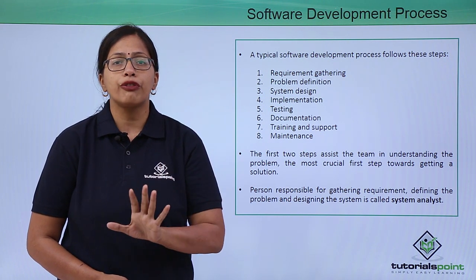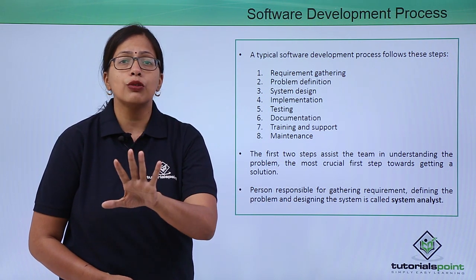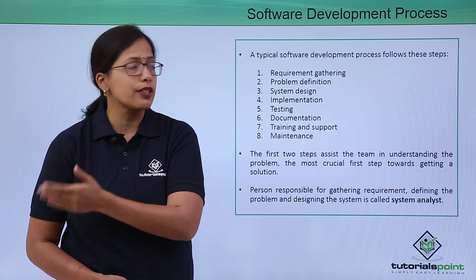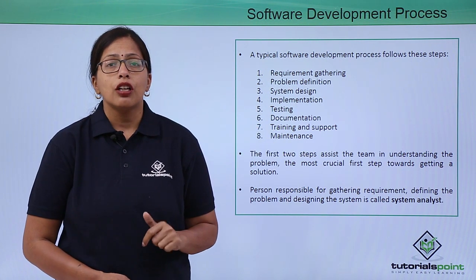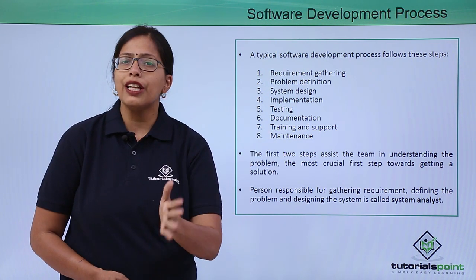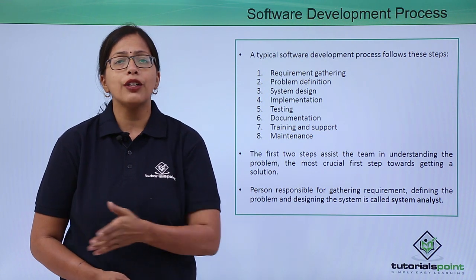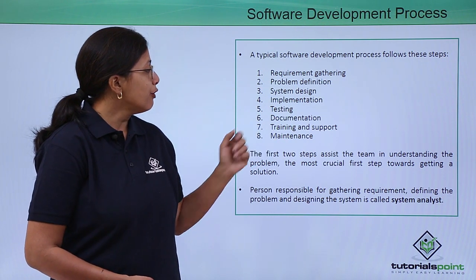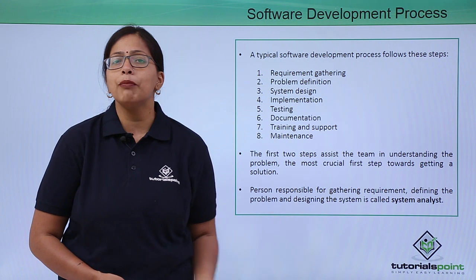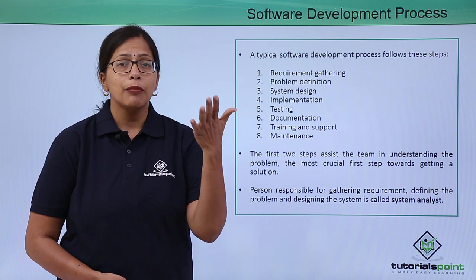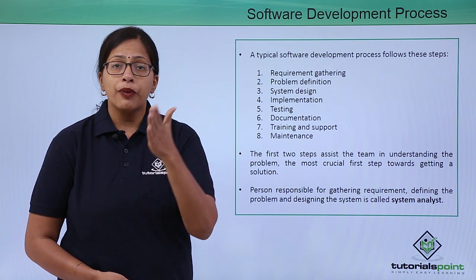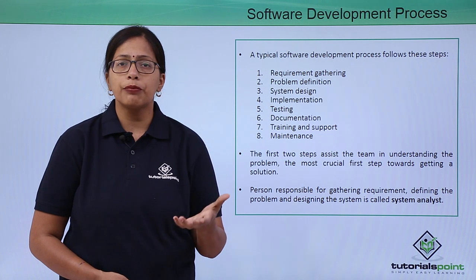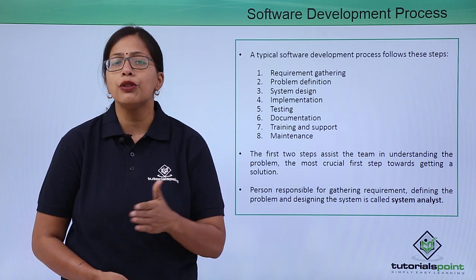Documentation — after testing is complete you have to make documentation of the whole software: what are the processes, what are the lexical units, what flowcharts are being used, what are the algorithmic processes. Training and support — you need to train your user to whatever level of training is required so that they can use the system they have been given. And finally, maintenance — once the system has been implemented at the client site you need to maintain it, both preventive maintenance and fixing any problems that users find when they are using the system.